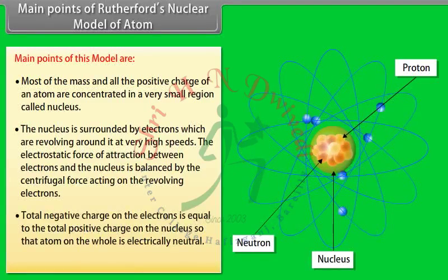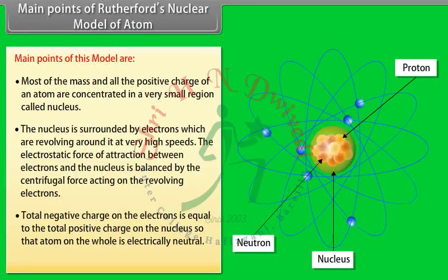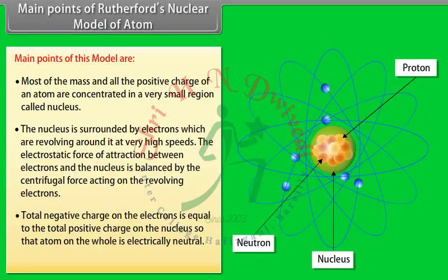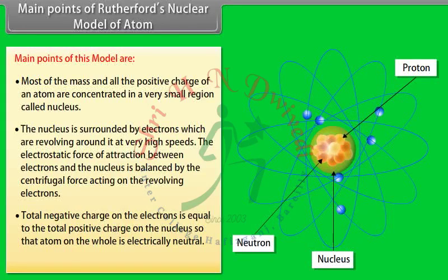3. The total negative charge on the electrons is equal to the total positive charge on the nucleus, so that the atom on the whole is electrically neutral. 4. Most of the space inside an atom is empty.